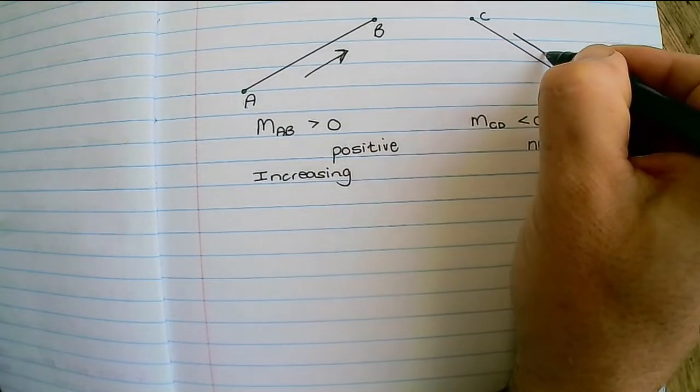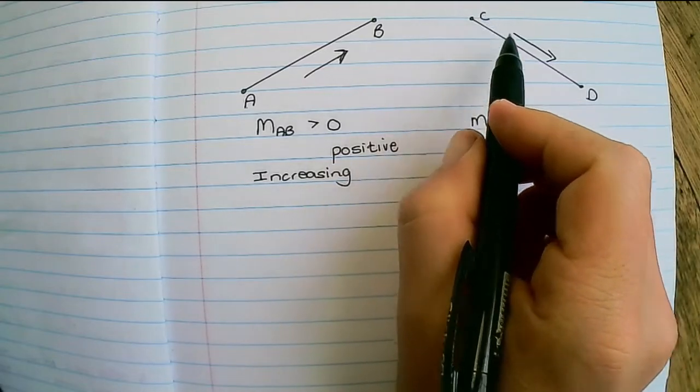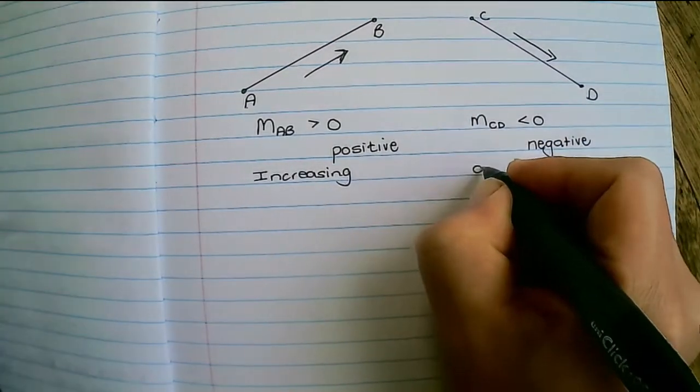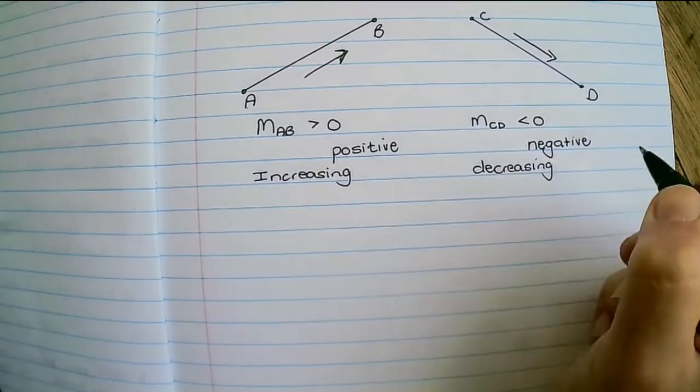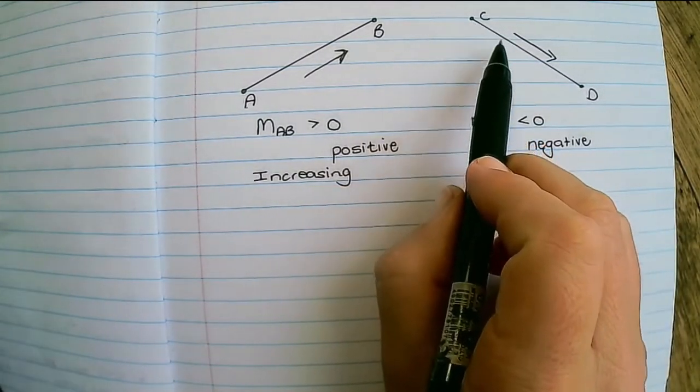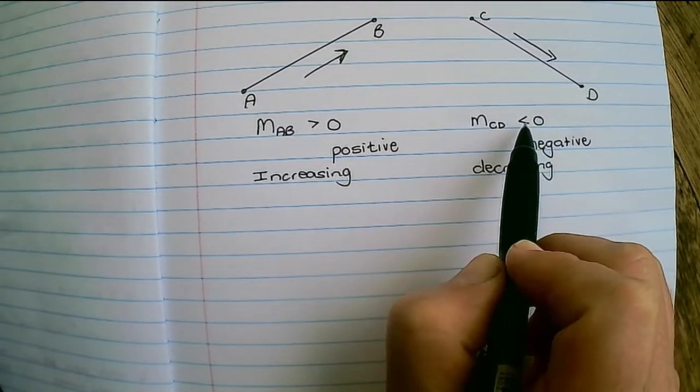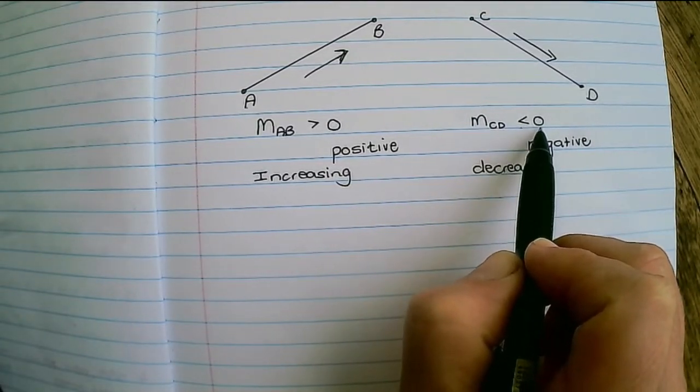right. So from left to right I move downwards, and when I move downwards we say the line is decreasing. And when the line is decreasing then it has a negative gradient, which means the gradient would be smaller than zero.